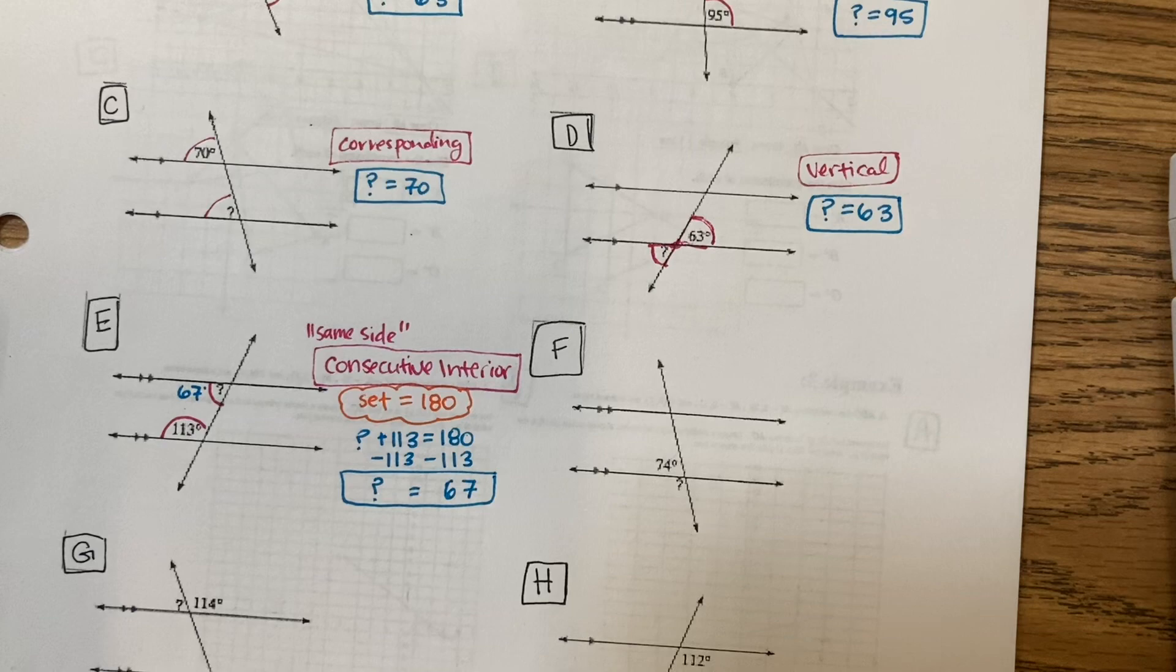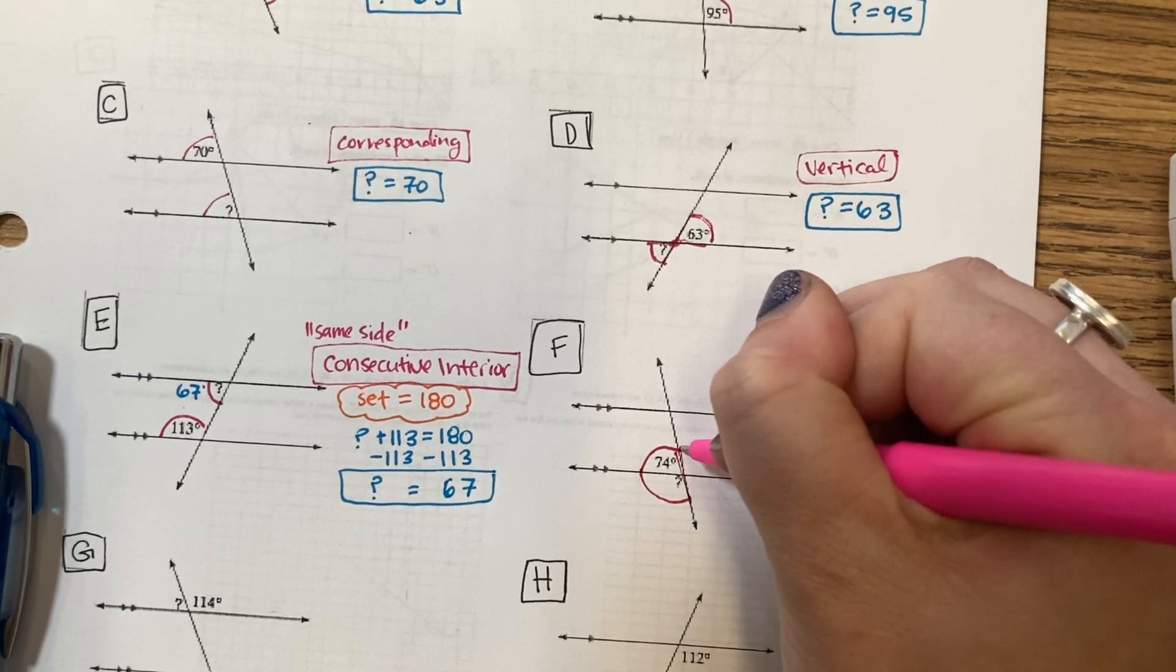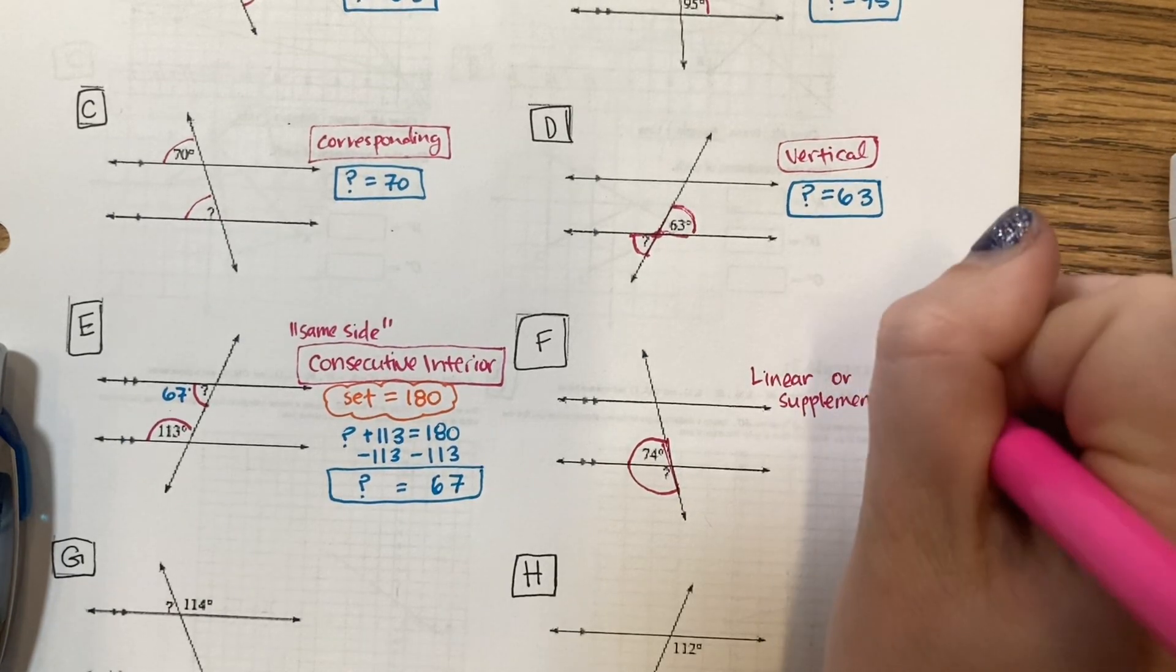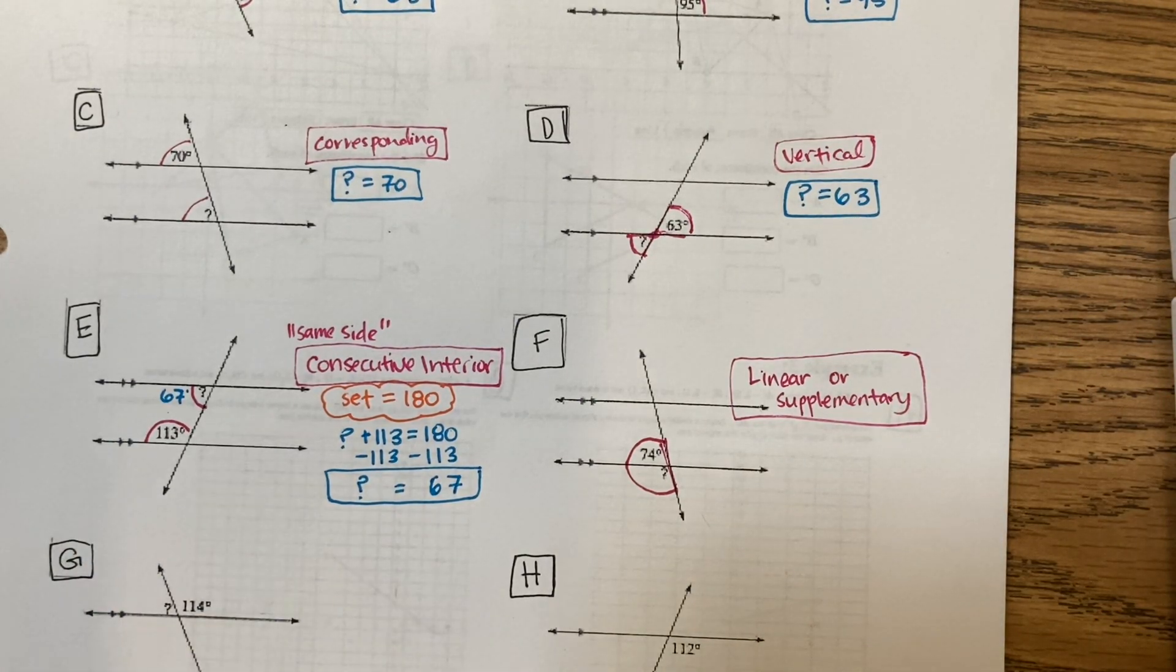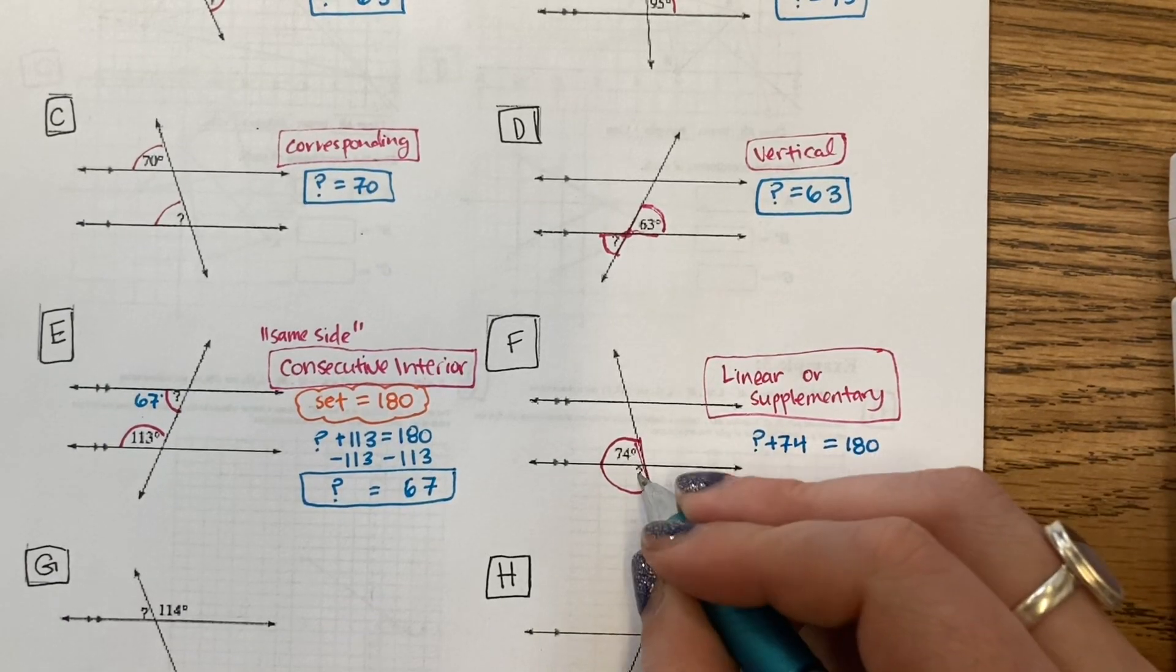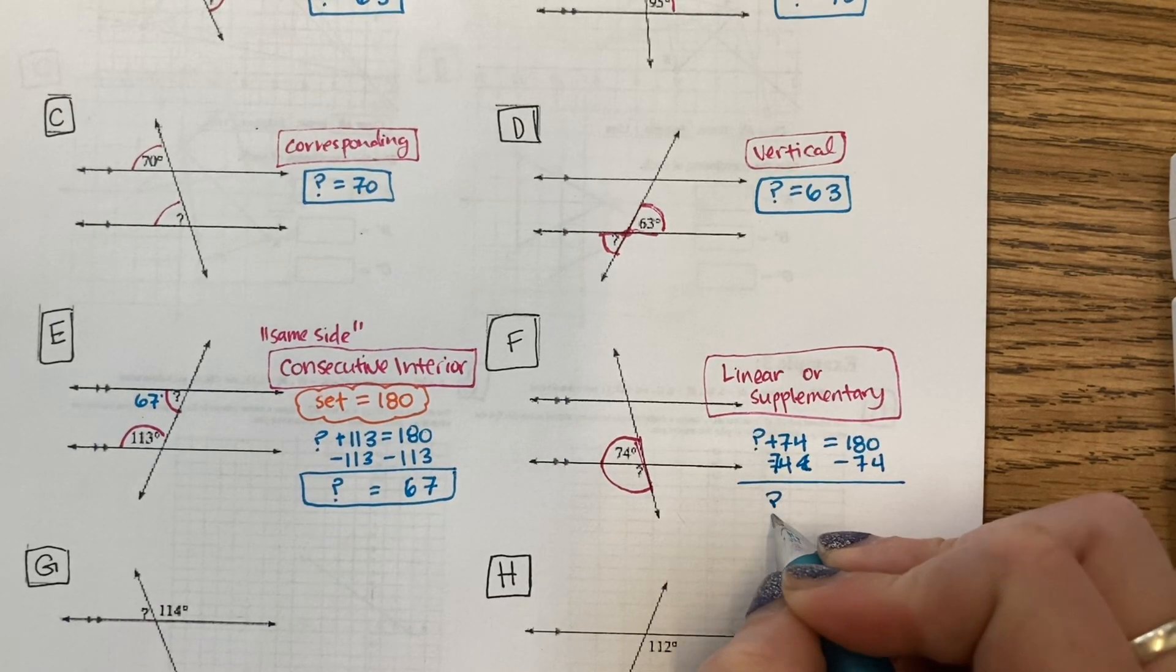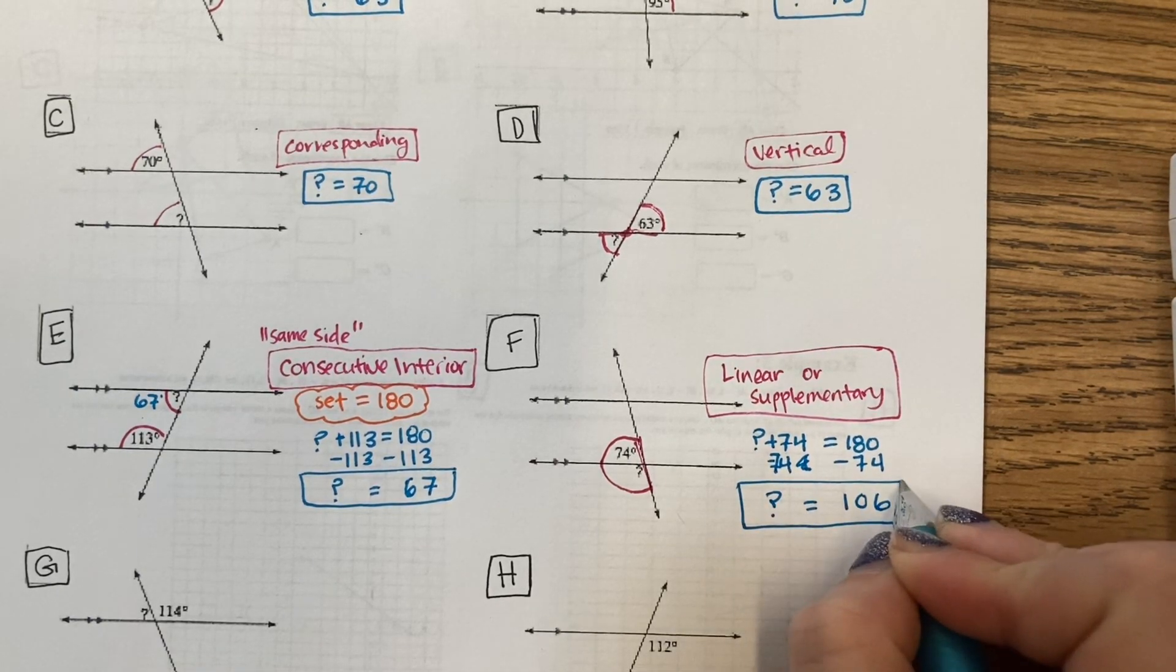F. I'm given 74 and the question mark. Together, these make a line. You can call them linear or supplementary. They will equal 180. They are different sized angles, so equal 180. Minus the 74. That's 106.